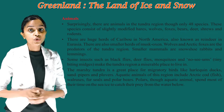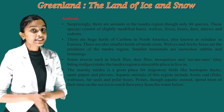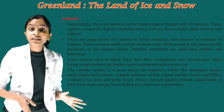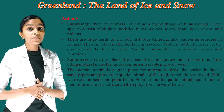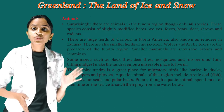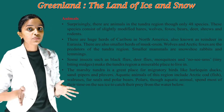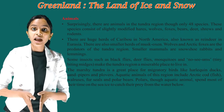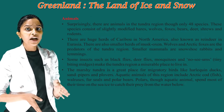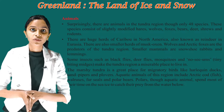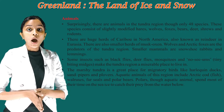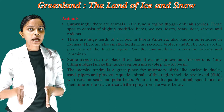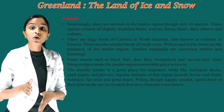Wolves and arctic foxes are the predators of the Tundra region. Smaller mammals are snowshoe rabbits and lemmings. Some insects such as black flies, deer flies, mosquitoes, and no-see-ums make the Tundra region a miserable place to live in. The marshy tundra is a great place for migratory birds like harlequin ducks, sandpipers, and plovers. Aquatic animals of this region include arctic cod fish, walruses, fur seals, and polar bears. Polar bears, though aquatic animals, spend most of their time on the sea ice to catch their prey from the water below.